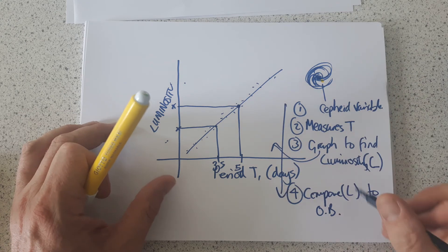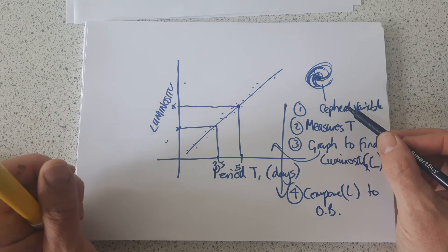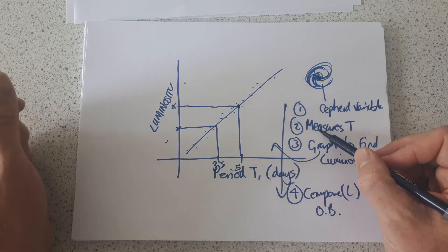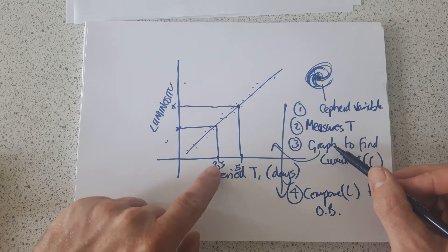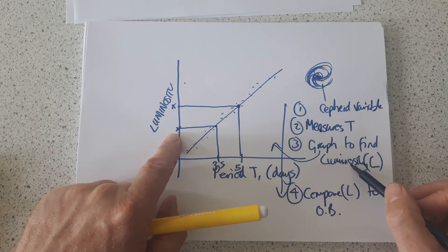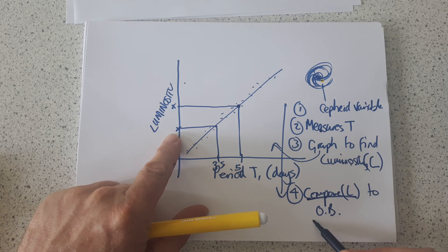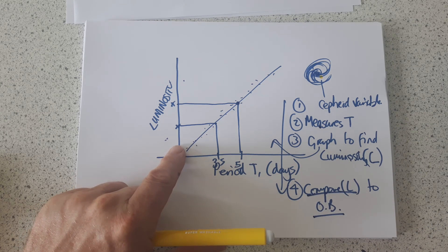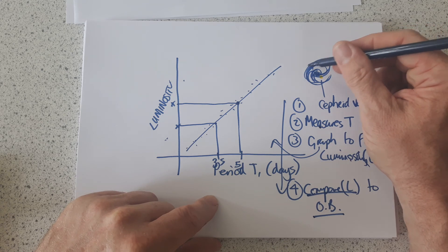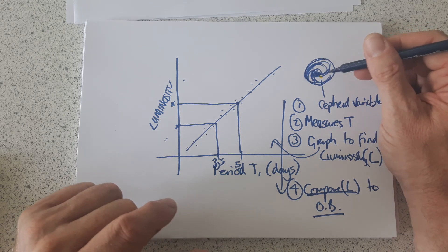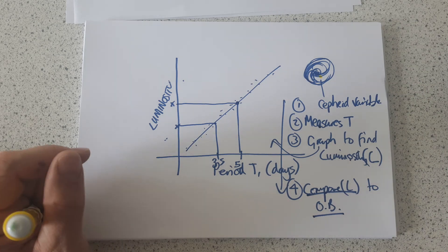So this is the method in itself. Find a Cepheid variable in a galaxy. Measure the periodic time. Use this graph to compare the period to the luminosity. Then compare the luminosity to the observed brightness measured on Earth. You then assume that all stars in that galaxy are the same distance away as the Cepheid variable star.